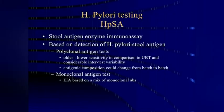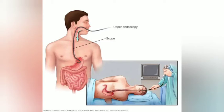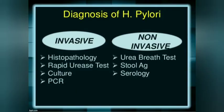The most accurate testing is the stool antigen test. Endoscopy with gastric biopsy can also be performed. Histology with silver stain or immunohistochemical staining reveals H. pylori infection, inflammation, intestinal metaplasia, and atrophy. Diagnosis is based on clinical presentation and non-invasive tests such as the urea breath test or stool antigen test.